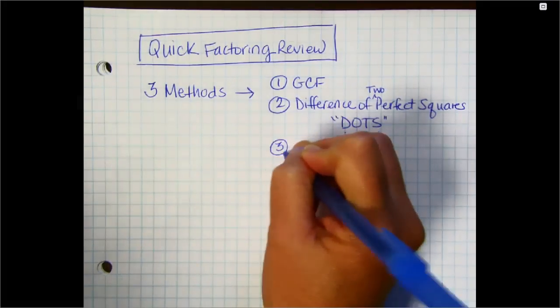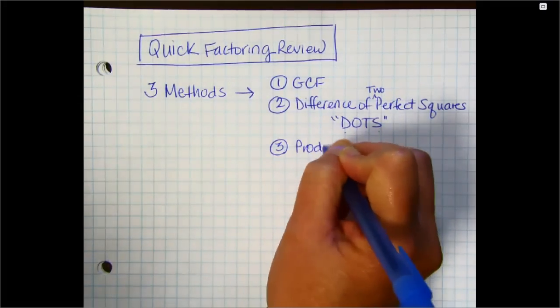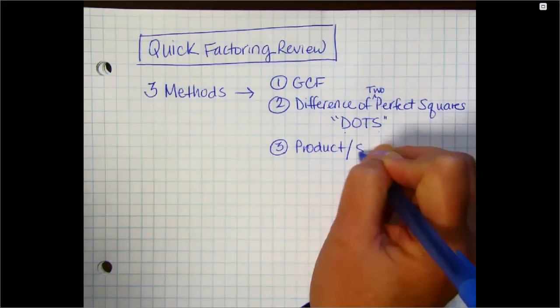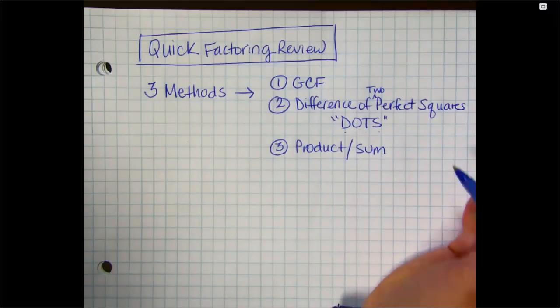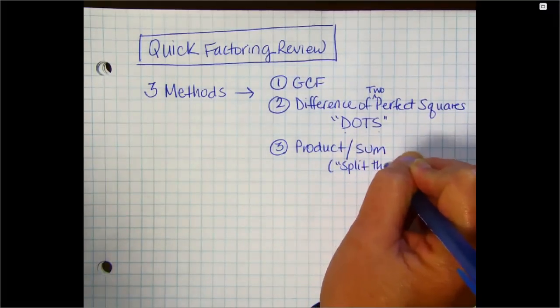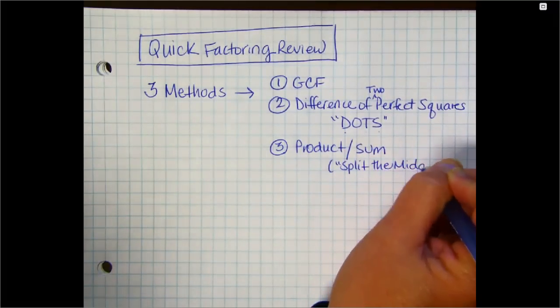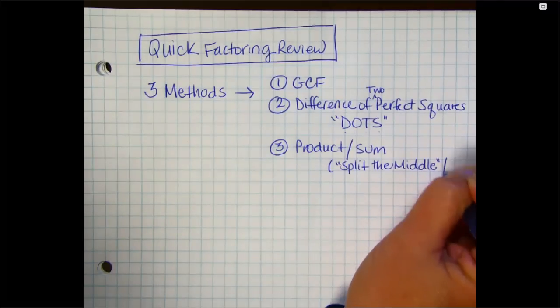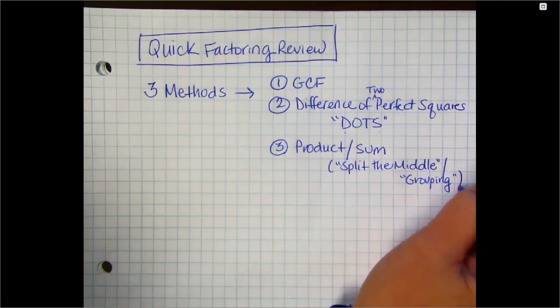And the third method is product sum, which is probably the one you'll use the most often. You'll sometimes hear that or see that called split the middle, and you'll see why as we go over it. Often people will call it factoring by grouping. It all means the same thing.